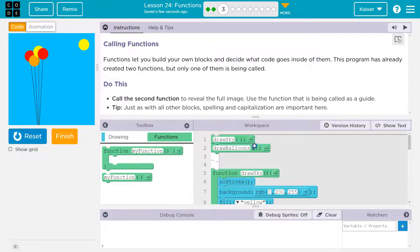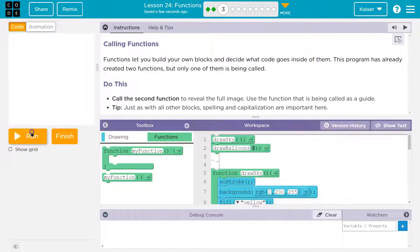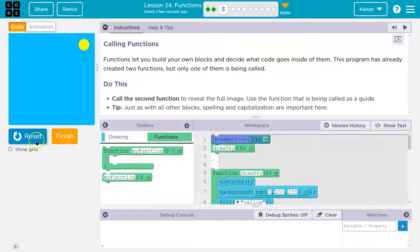And just to reiterate this, y'all, let me, yeah, reset. Let me drag draw balloons up a line. Well, now the computer runs code in order. It's going to draw balloons and then paint over it with blue.